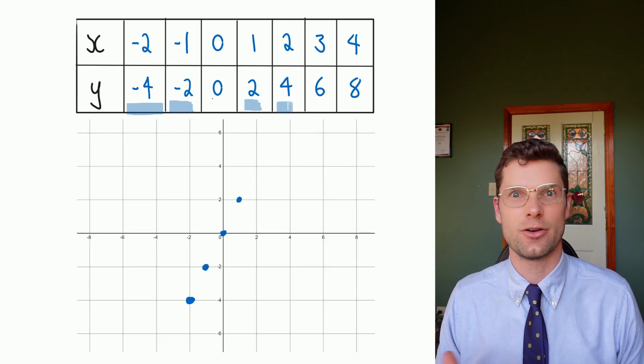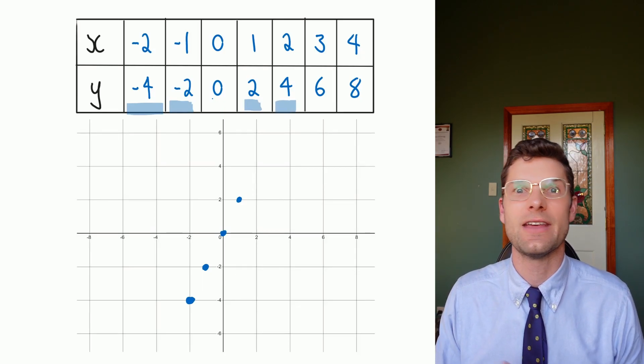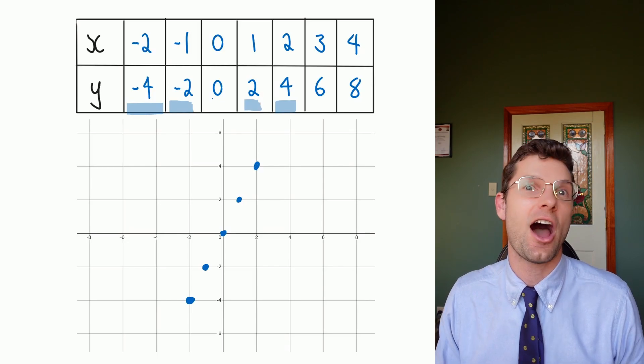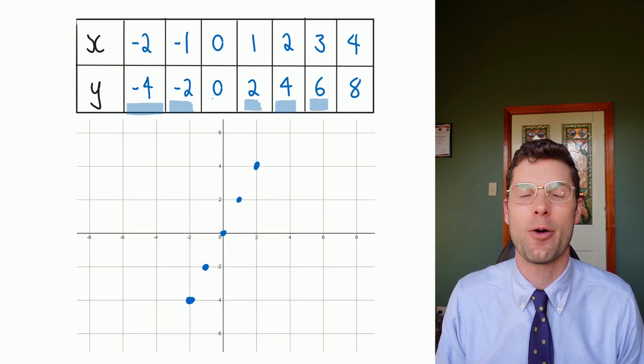Then we're going to (2, 4), so across two, up four. Then across three, up six. I don't actually have enough space to do the last one on my graph, but you should be able to see the pattern straight away.